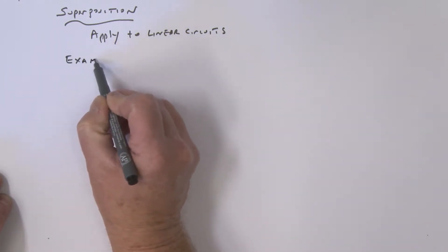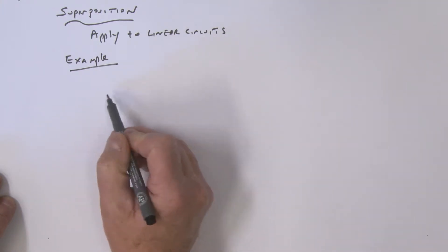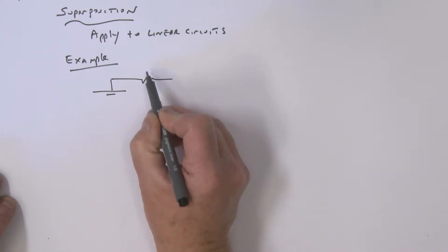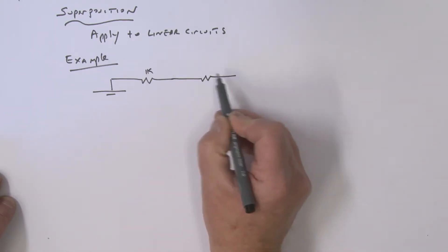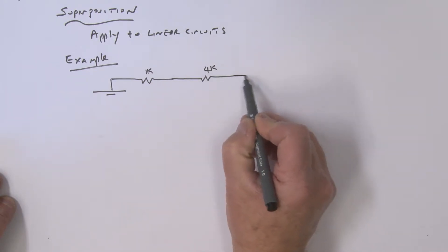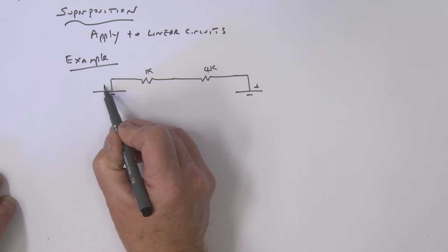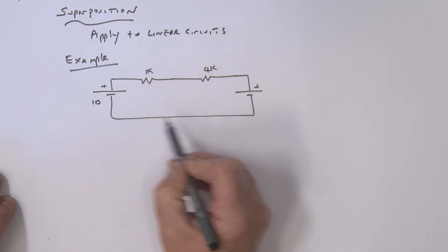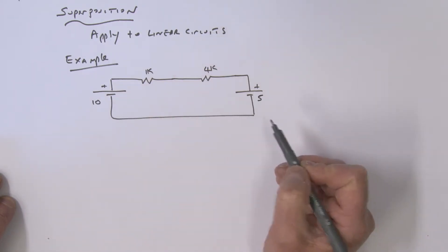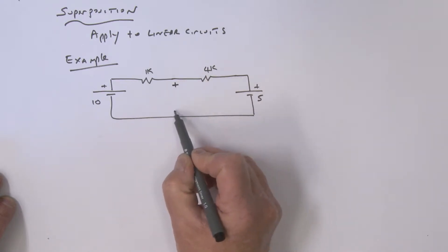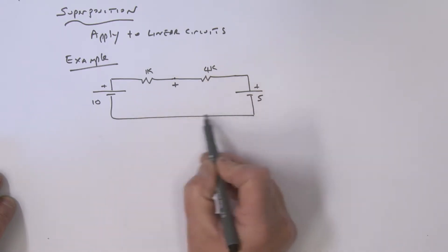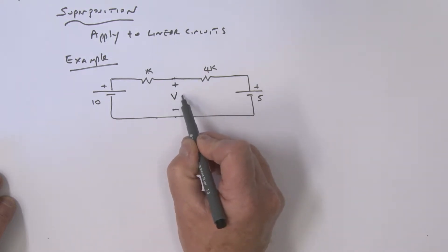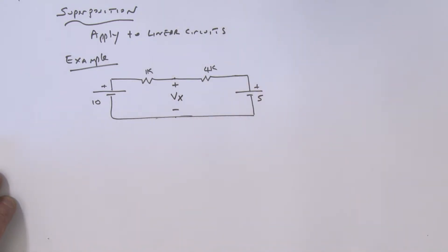We're going to take something really simple — a circuit with two sources. There's a source here, a 1kΩ resistor, another 4kΩ resistor, and another voltage source. This is the basic circuit we want to analyze. There will be 10 volts here and 5 volts over here. What we want is the voltage between this point and our reference — we'll call that voltage Vx.